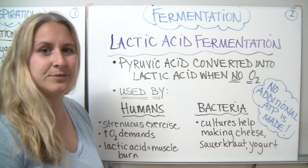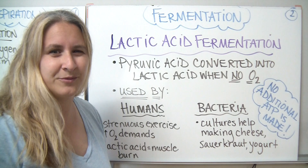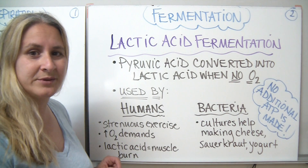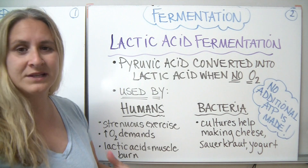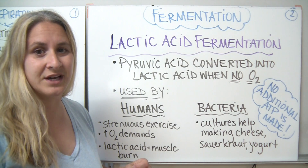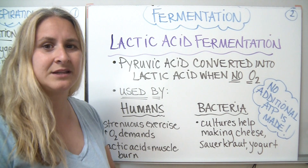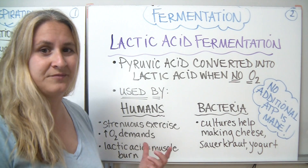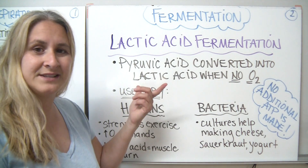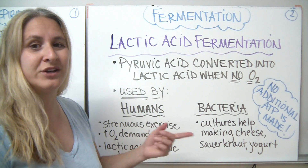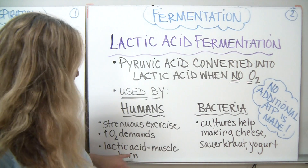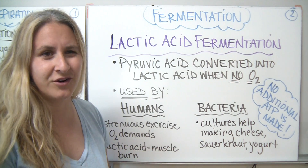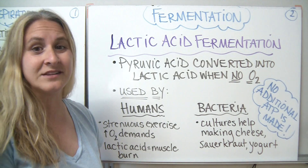Lactic acid fermentation can also be used by humans. You might be thinking we're aerobic, complex organisms — and that's where the issue comes in. Humans carry it out during strenuous exercise when we have very high demands for oxygen. Our muscles are using a lot of energy, and sometimes our blood just can't deliver enough oxygen to the muscles to keep carrying out aerobic respiration. So out of desperation, the body takes that extra pyruvic acid and converts it to lactic acid. That lactic acid is what causes that muscle burn when you're working really hard.